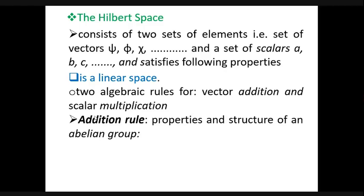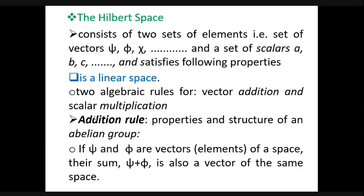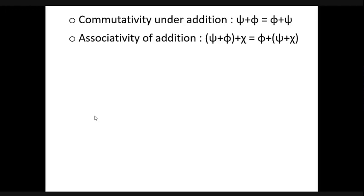In the addition rules, the structure follows an abelian group. If psi and phi are two elements of the space, then their sum psi plus phi also belongs to the same space. This follows closure. It also follows commutativity: psi plus phi is equal to phi plus psi, so addition doesn't depend upon the order of adding these two elements.